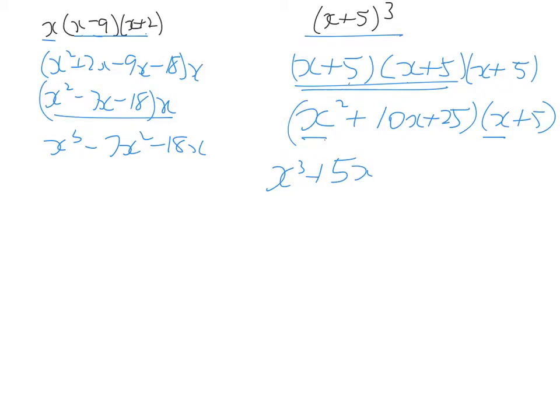Then we've got 10x multiplied by x, so we've got 10x squared, and 10x times 5, so we end up with 50x. 25 times x, so we get 25x. And 25 times 5, so we get 125.